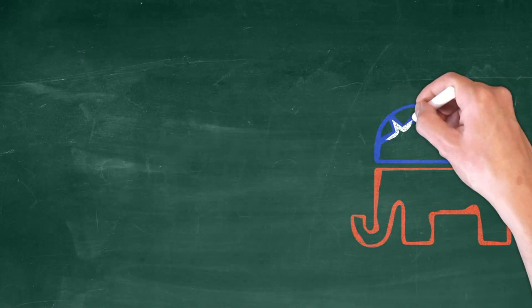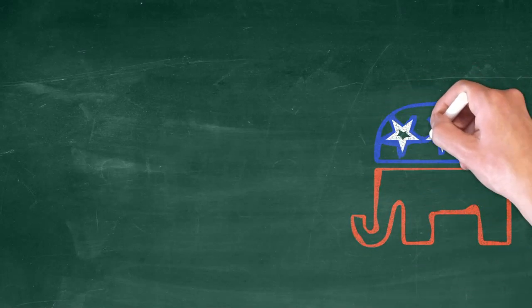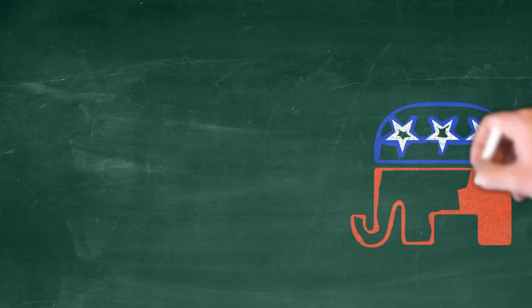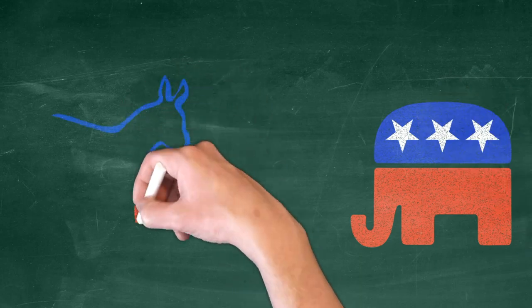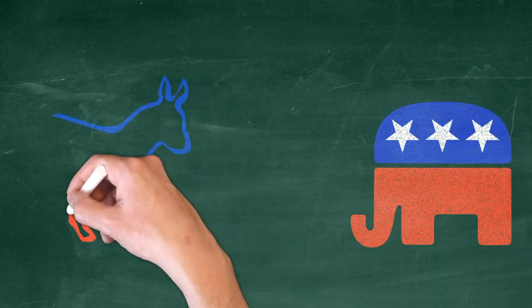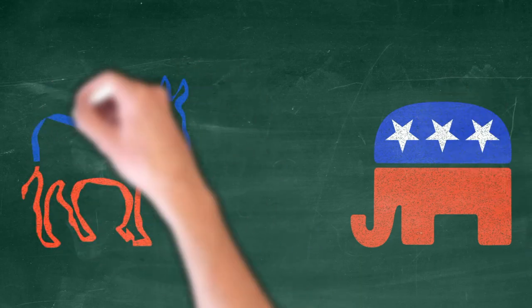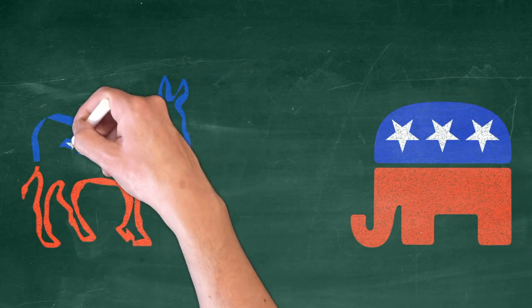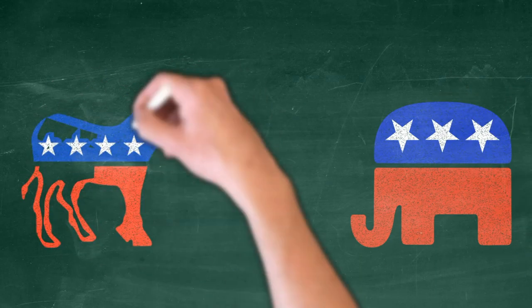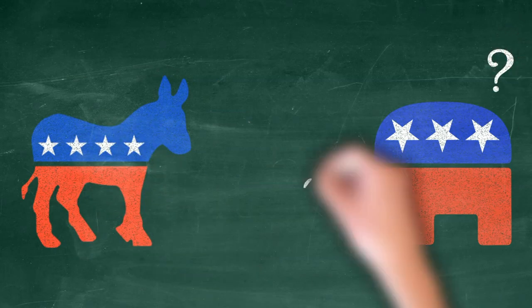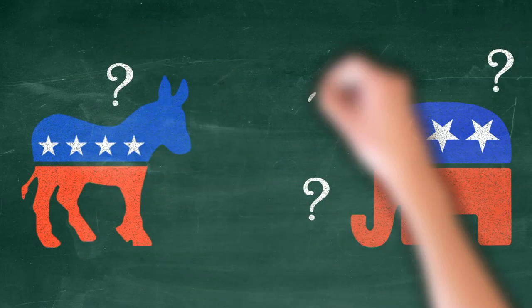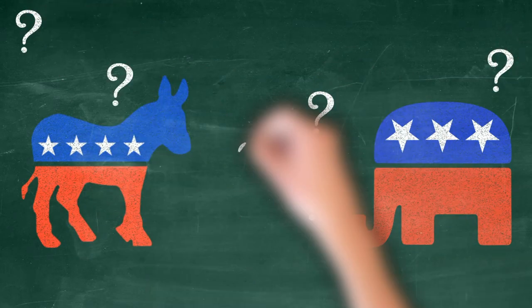The desire for some kind of third party to run things in the U.S. is pretty common. Complaining about the two major parties in the United States is even more so. And yet actually voting for third parties is extremely rare. How can we explain this contradiction?